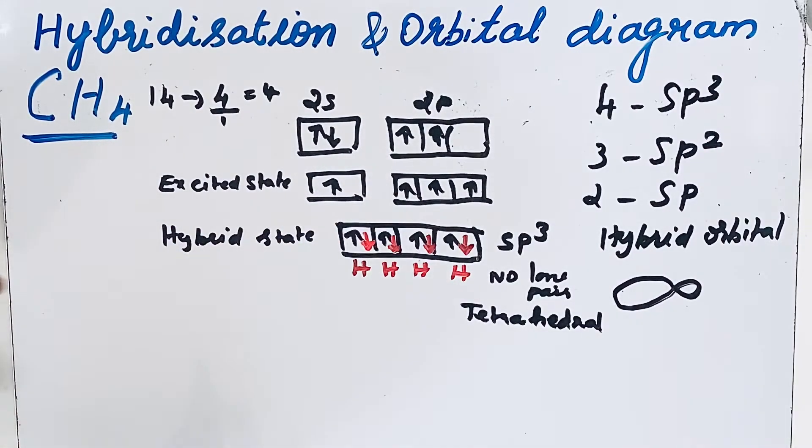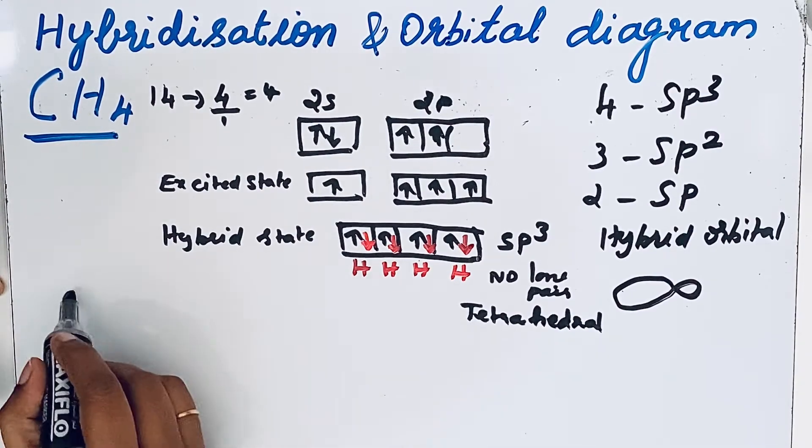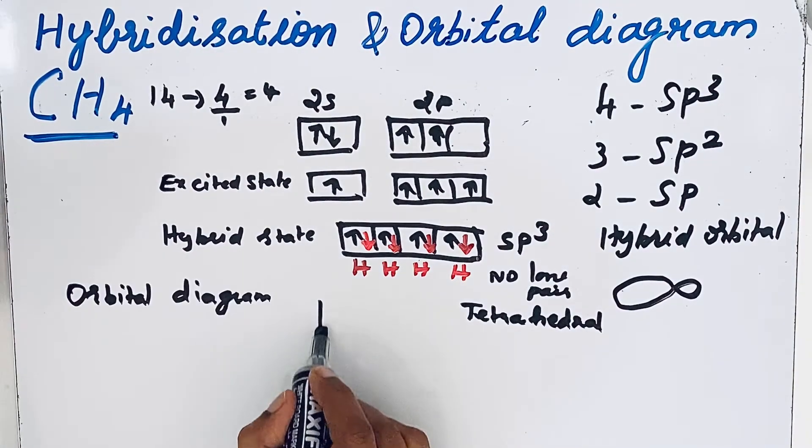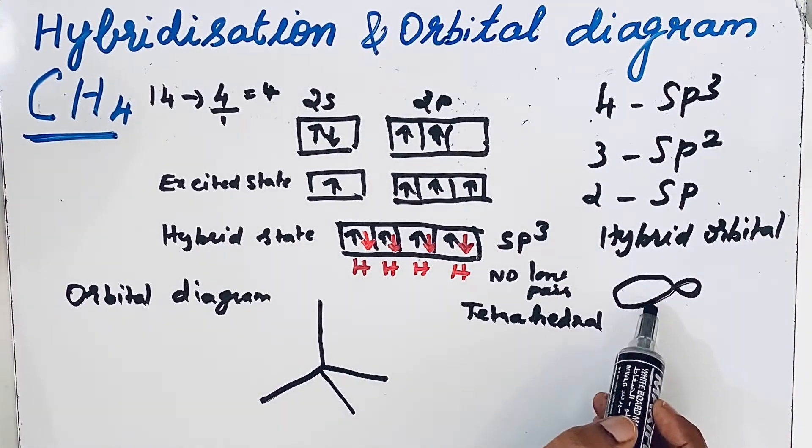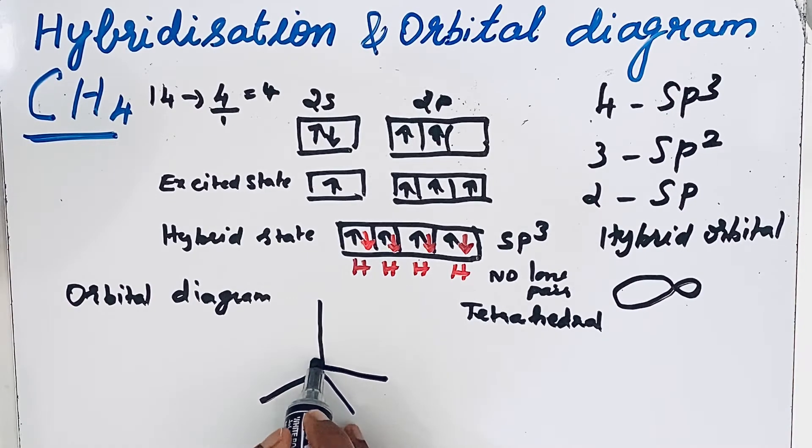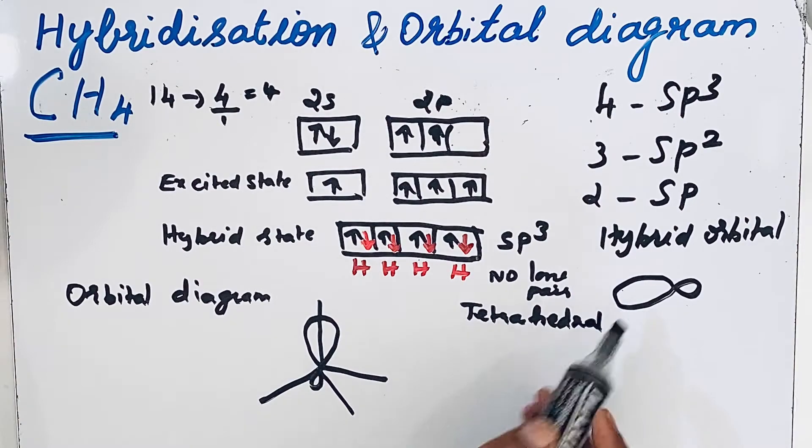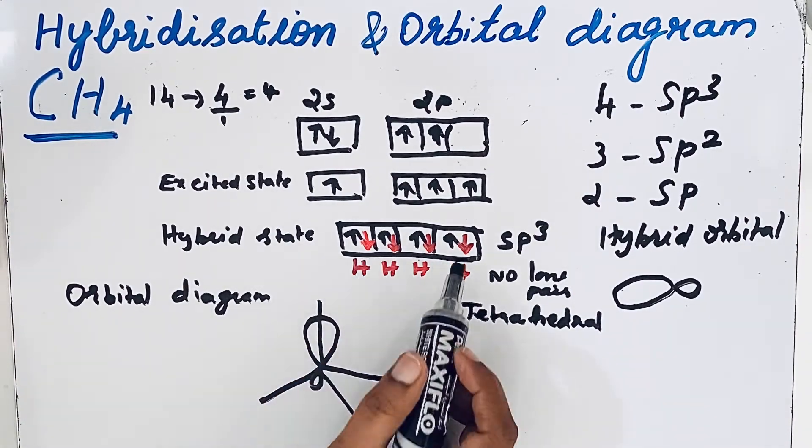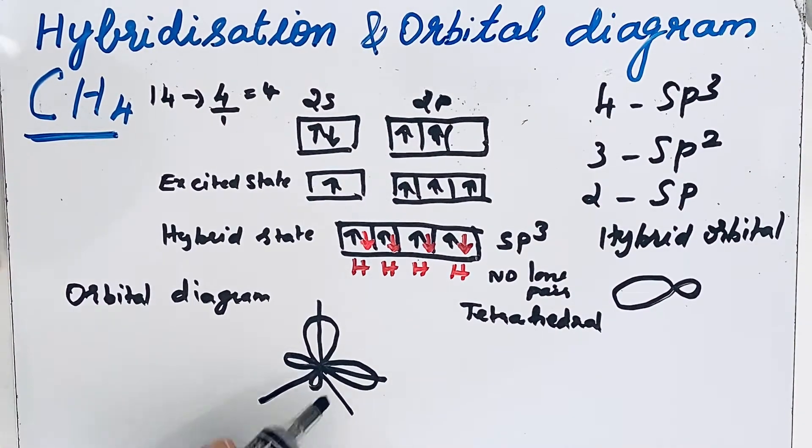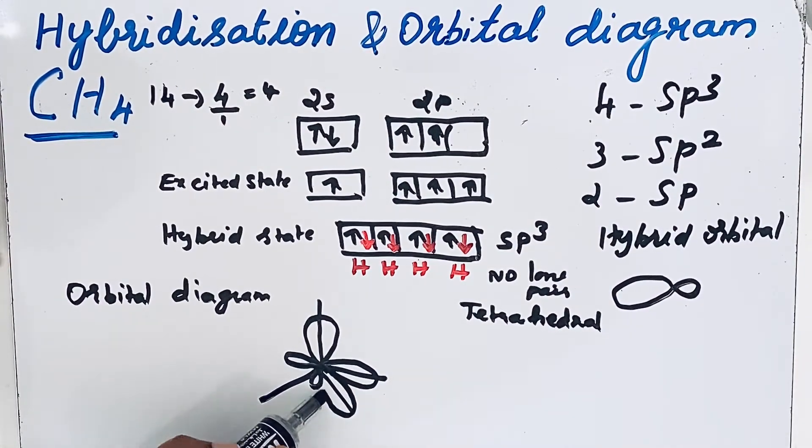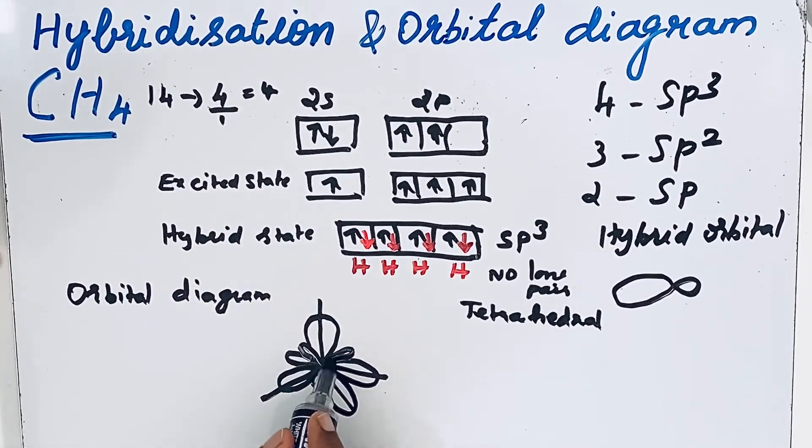Now we will see how to draw that orbital diagram. So first to draw that orbital diagram, draw lines like this. You know that hybrid orbital: one loop is little bigger, another loop is smaller. Then 4 hybrid orbitals are there. So we will draw like this: 4 hybrid orbitals. Then the third one. Then the fourth one.